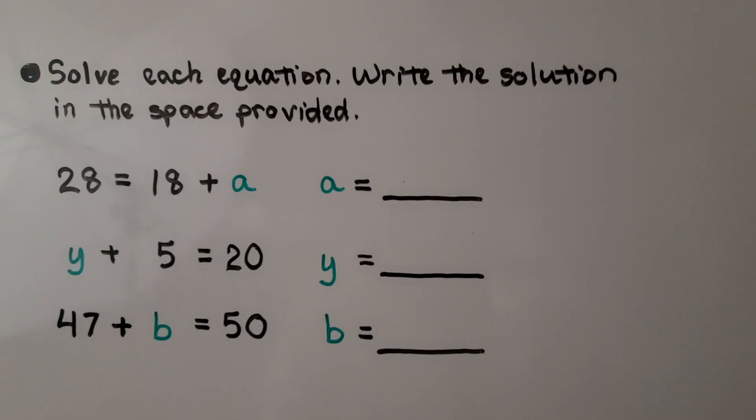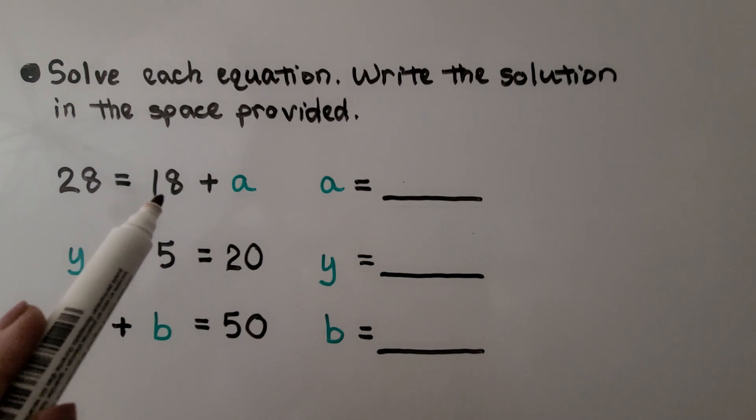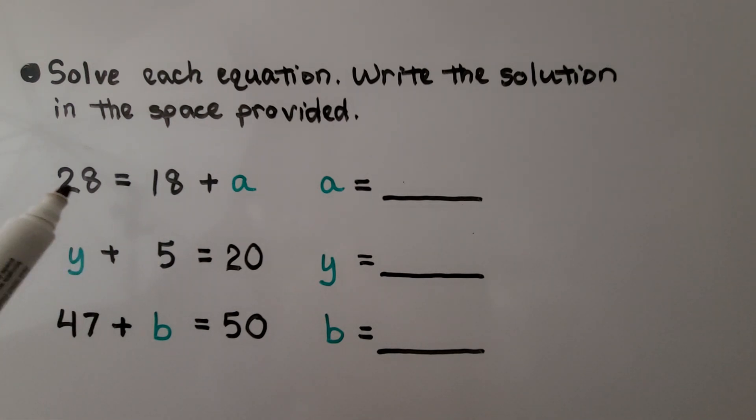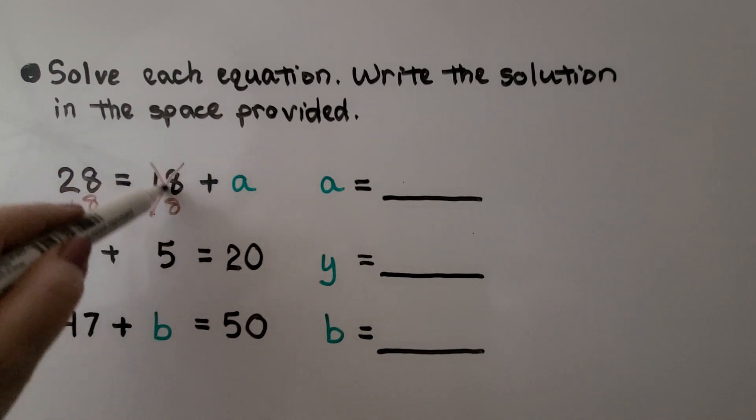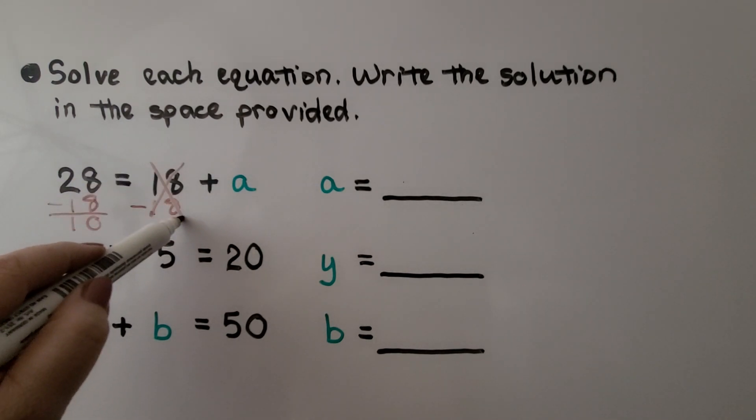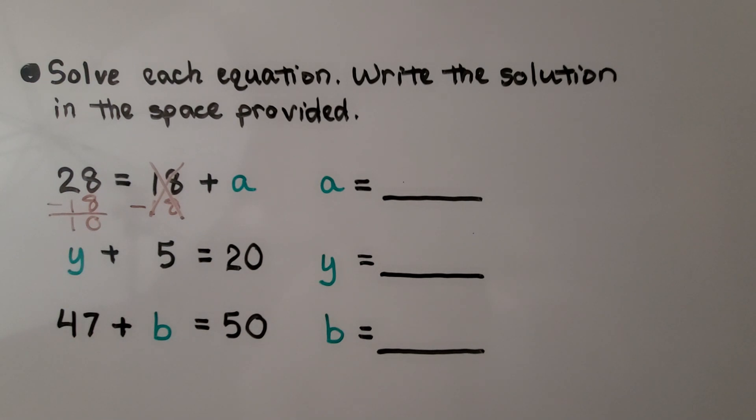It's telling us to solve each equation, write the solution in the space provided. We have 28 is equal to 18 plus a. We need to find the value of a. Well, we have 18 on this side and 28 on this side. And 28 is great enough to take 18 away from it. If we take 18 away from this side and 18 away from this side, then we have 10 on this side. We've removed the 18 because we took it away. We have 10 is equal to a. We know a is equal to 10.